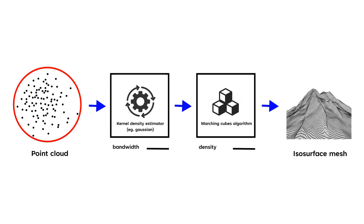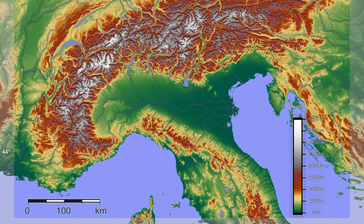We can then feed this scalar field into a second function called the marching cubes algorithm, along with a density value. This produces an isosurface of constant density, much like the contour lines that show common elevation on a topographic map. I could give an entire presentation on how to choose appropriate bandwidth and density values, so I won't discuss that today. Once you have several isosurface meshes, you can combine them together to form a top-down map, much like we can combine elevation meshes to form a terrestrial map.